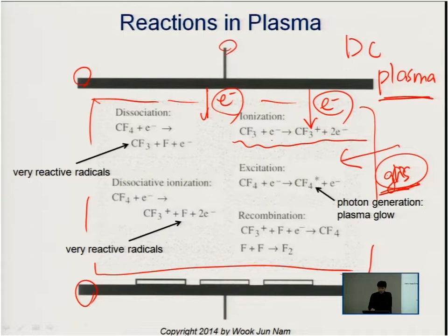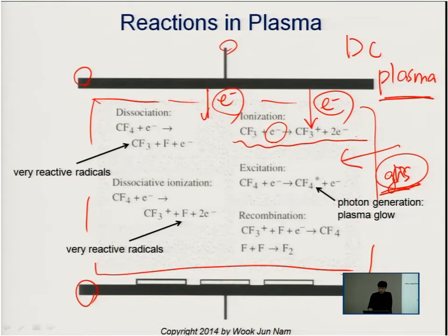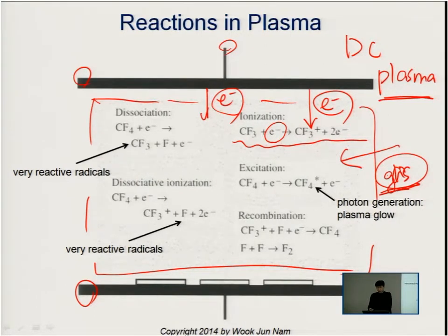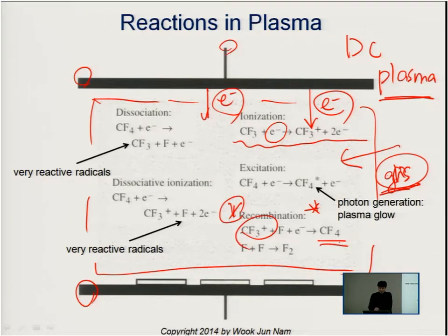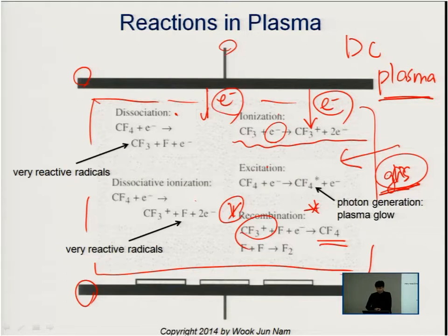During ionization, the original electron produces another electron — a secondary electron. This secondary electron also collides with neutrals and causes further ionization. The process is like an avalanche: secondary electrons keep ionizing gases, which is why once plasma is generated it is maintained. Recombination is the reverse process of ionization — by collisions, it loses ions. There are three other processes happening once plasma is generated between the two electrodes.